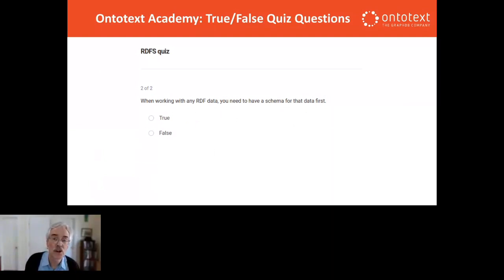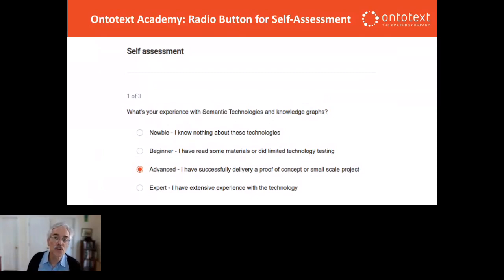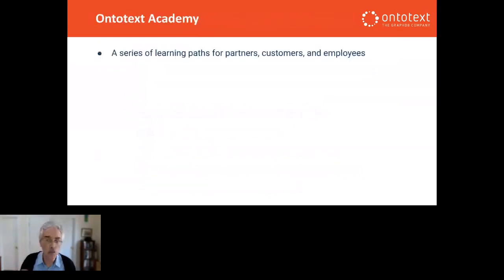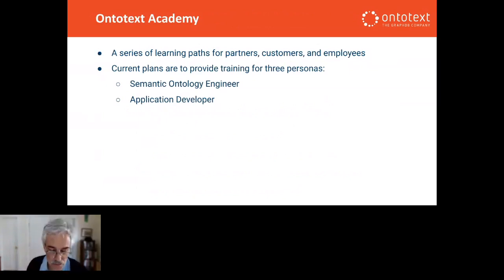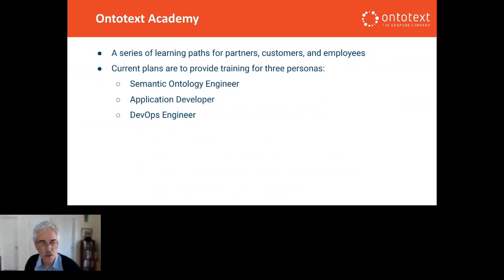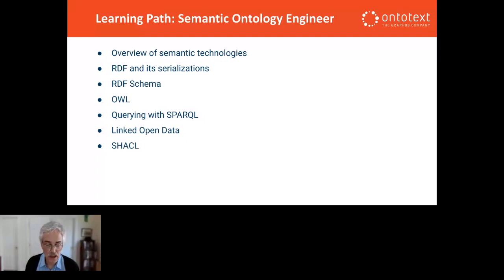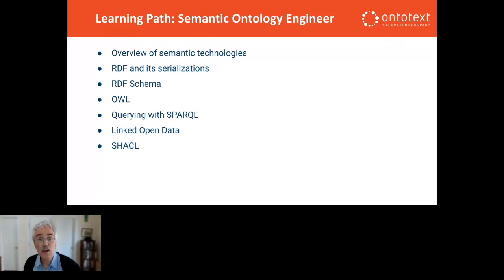To review the three currently planned learning paths — and there may be more, we might split some or add or combine — semantic ontology engineer, application developer, and DevOps engineer. For a semantic ontology engineer, it's the basic standards and how they fit together. The linked open data section will provide a review of popular datasets out there and how you can take advantage of them. And then the SHACL part could help clean them up — another topic we've heard about today: cleaning up publicly available data.